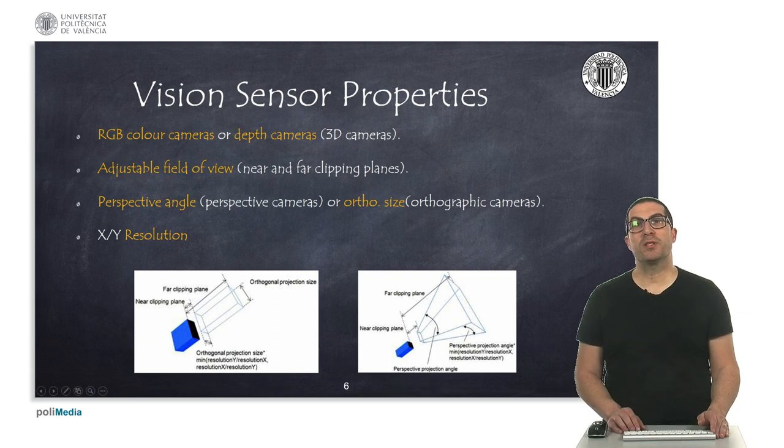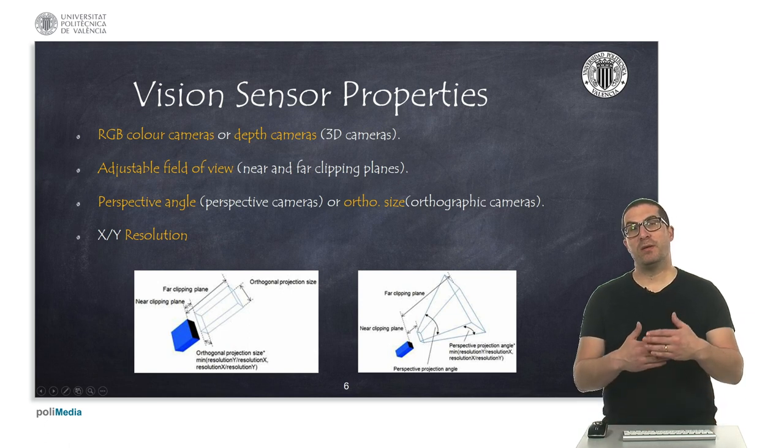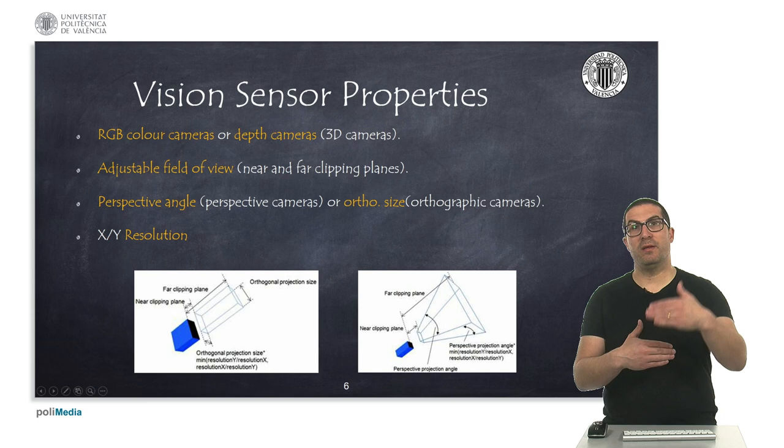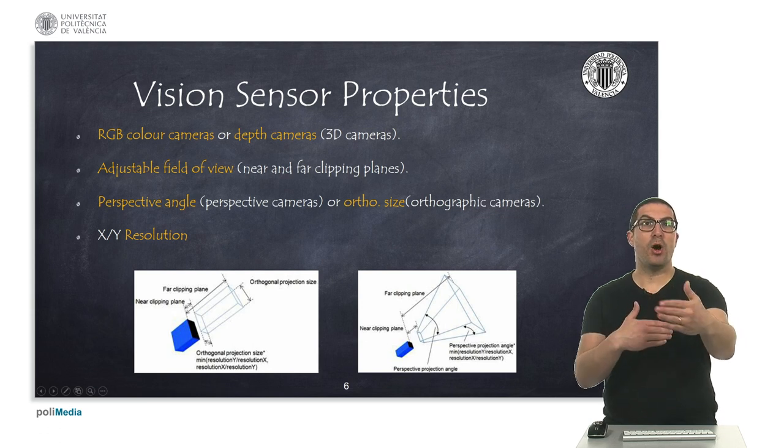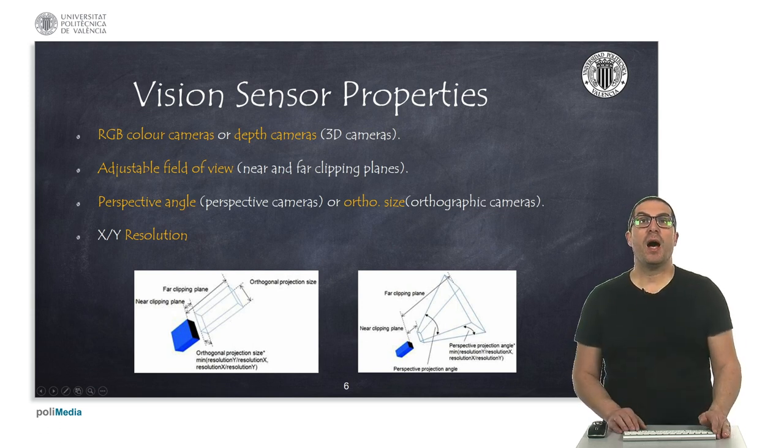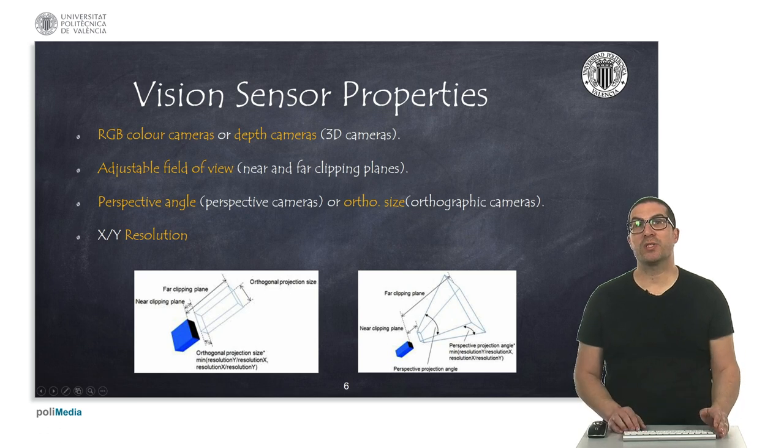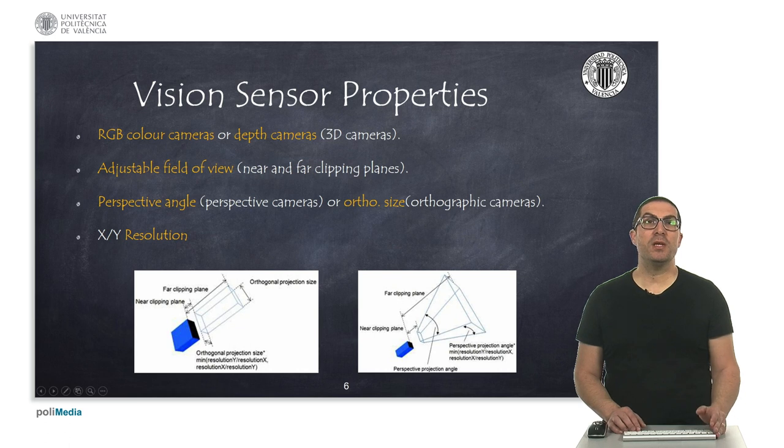The most relevant parameters when using vision sensors are the field of view, which are the near and the far clipping planes where the object is focused, as well as perspective angles and the ortho size. Also, a very important parameter is the sensor resolution, which defines the number of pixels of your image.